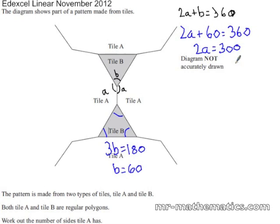So angle A, the interior angle of tile A, must be 150 degrees.